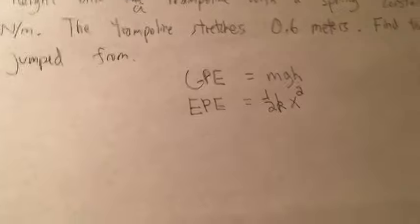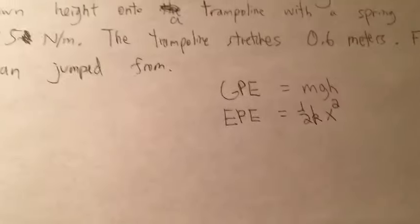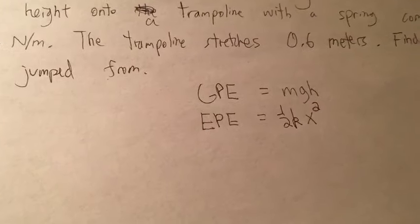The second equation is elastic potential energy, or spring potential energy, equals one-half K, which is the spring constant, times X, which is the distance the spring stretched, squared.